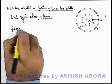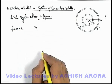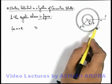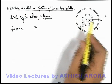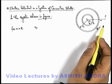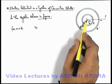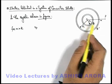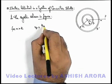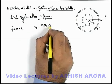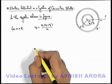For x greater than capital R, if we find out the potential at point P, then both of these charges appear to be concentrated at the centre, because for the outer region of a metallic shell or sphere, all charges appear to be concentrated at the centre. So we can directly apply the result of a point charge: potential at P is k(q + q dash) / x.